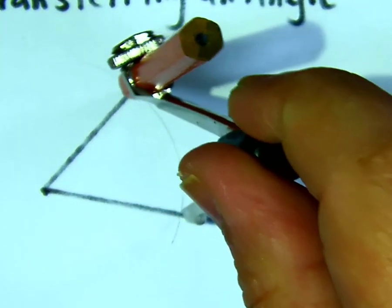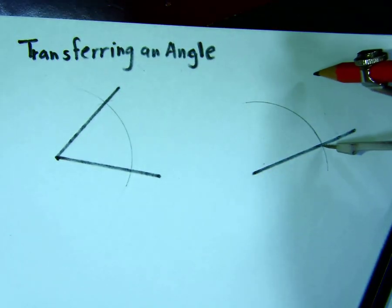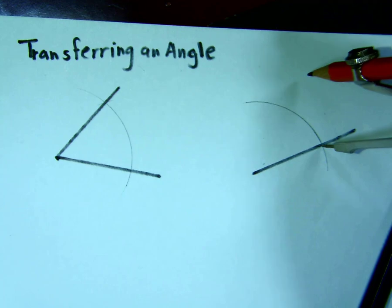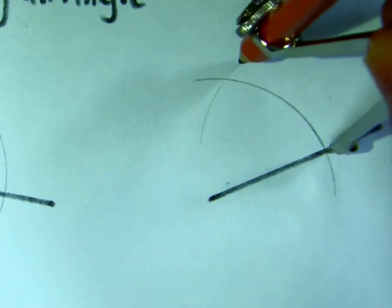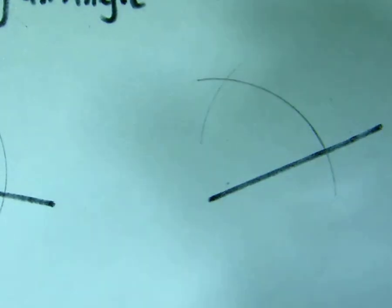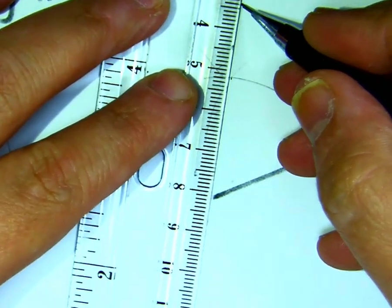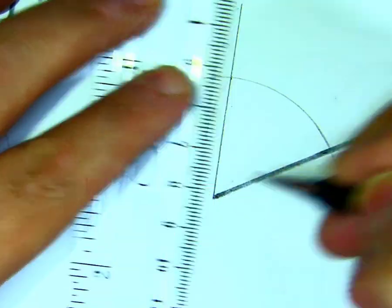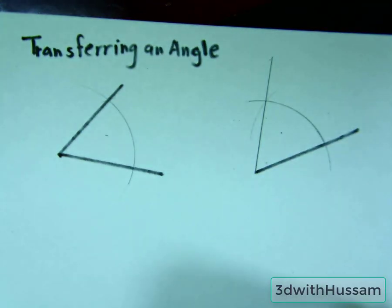Draw the arc. At this intersection you are going to connect, so now this angle has the same value as this angle. I hope you enjoyed, thank you very much.